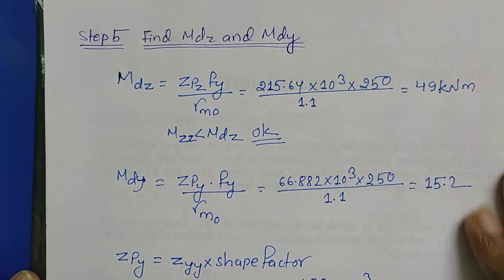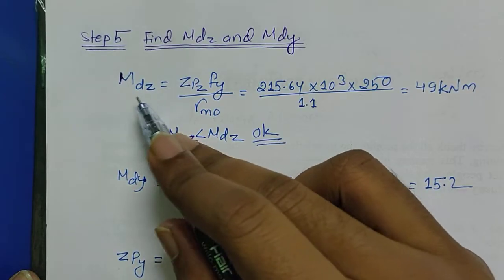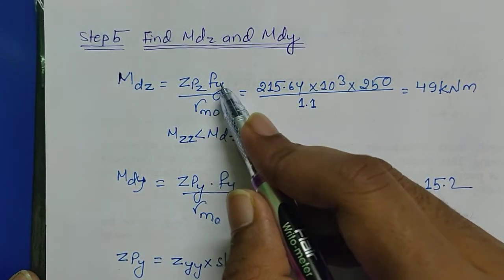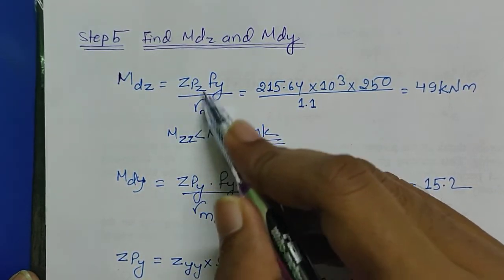D by TW, where D is calculated by using formula D equals H minus 2T1 plus 2 times R1. Value can be calculated from the steel table book SP6.